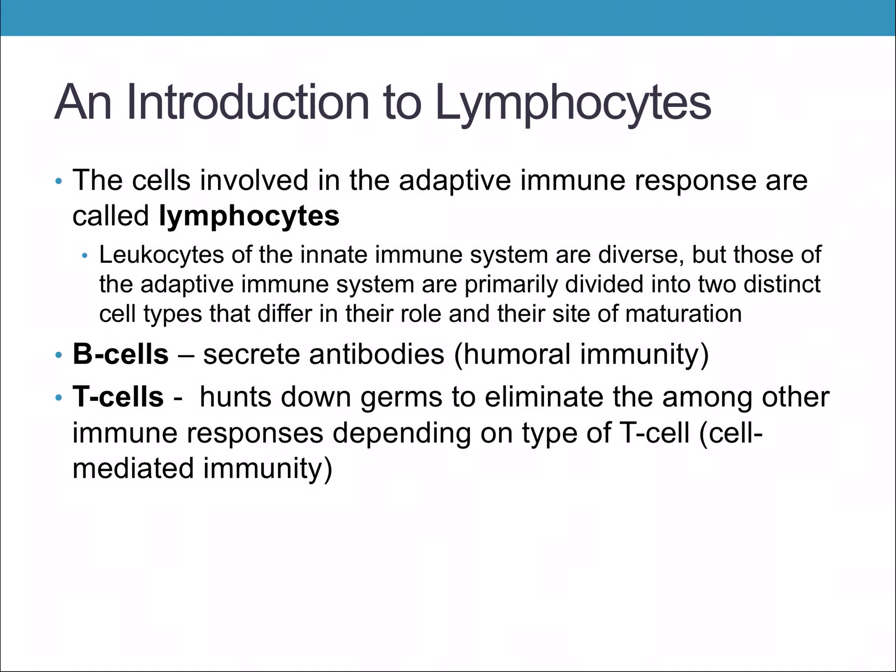This is part two of the immune system lecture. We're talking about the specific cells of the immune system. The cells of the immune system are called lymphocytes, and they're involved in the adaptive immune response.